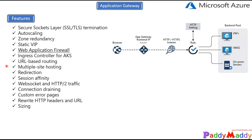Multiple site hosting allows you to configure routing based on a hostname or domain name for more than one application on the same Application Gateway. This enables more efficient deployments — you can add 100-plus websites to a single Application Gateway, and each website can be directed to its own backend pool.